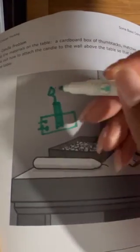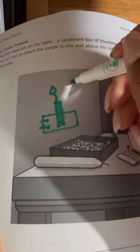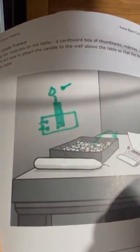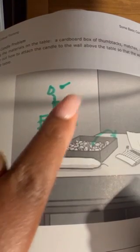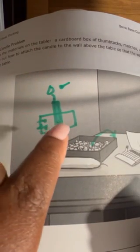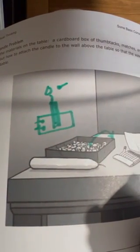And then you would use the matches to light it. And there you have it. The candle is inside of the box so when you light it with the match, it drips into the box attached to the wall.